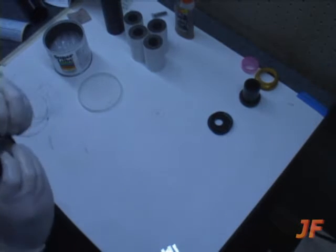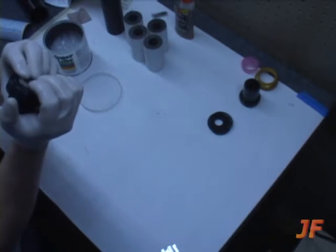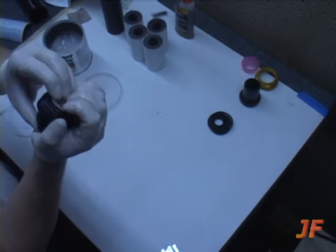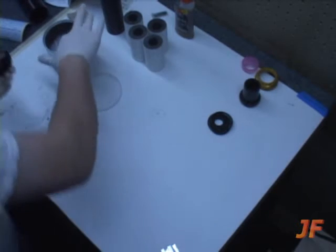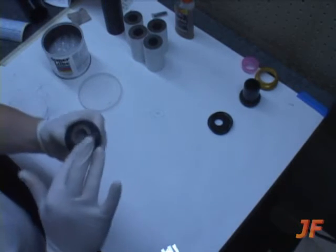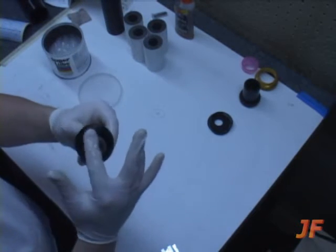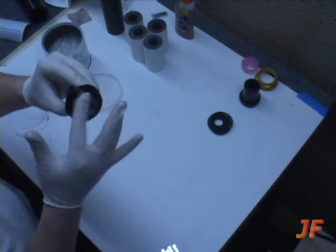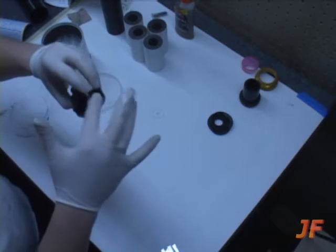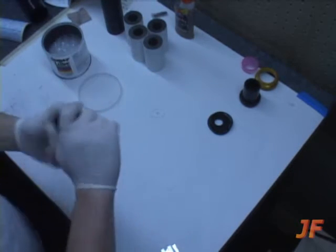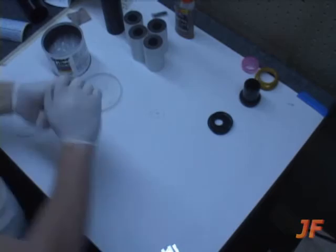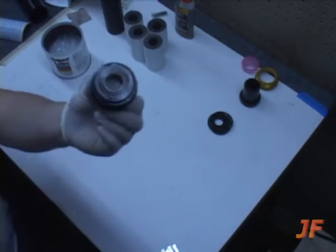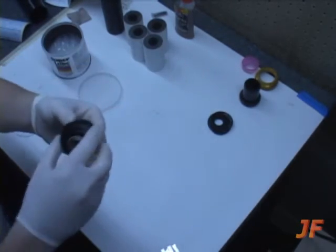Drop that whole assembly in. Some o-ring compression there. And again for ease of clean up I'm pretty liberal with the lube. So forward closure is ready to go. Set that off to the side.